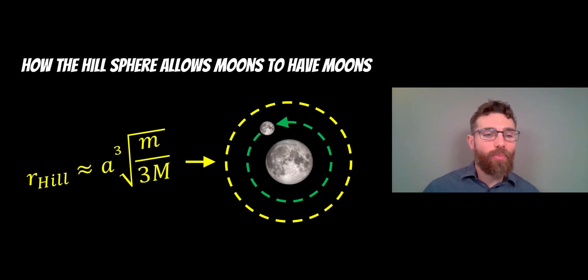So here we've got an expression for the hill radius, and then showing that the actual moon has to have an orbit within the hill radius.